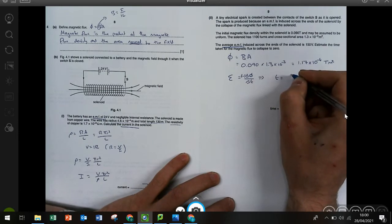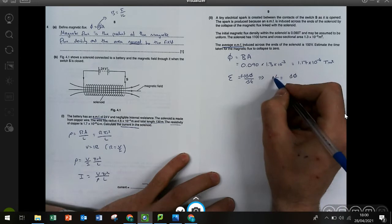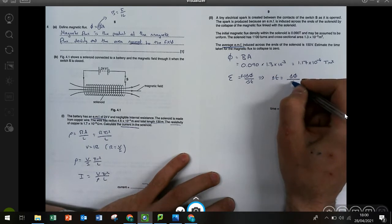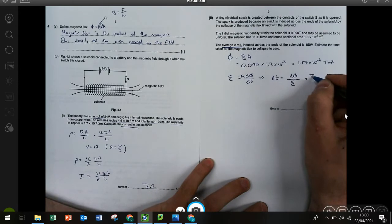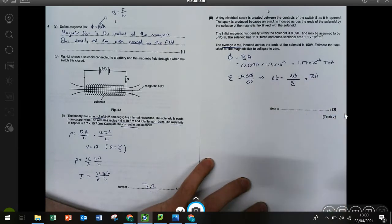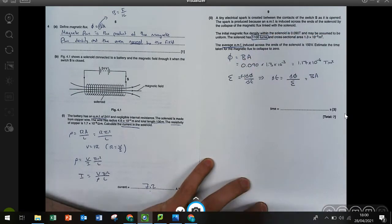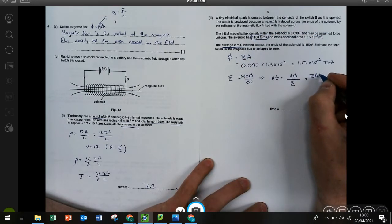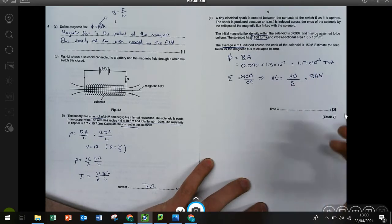So if we rearrange, time is the change in magnetic flux over the EMF. And magnetic flux is given by obviously BA. But importantly, we've been given a lot of turns. So we have to account for each of those turns, because each of those turns will multiply the magnetic flux as the field goes through every single turn.